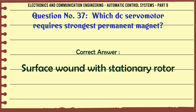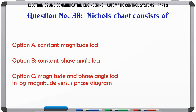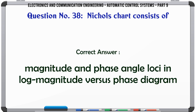Nichols chart consists of: A. Constant magnitude loci, B. Constant phase angle loci, C. Magnitude and phase angle loci in log magnitude versus phase diagram, D. None of the above. The correct answer is: Magnitude and phase angle loci in log magnitude versus phase diagram.